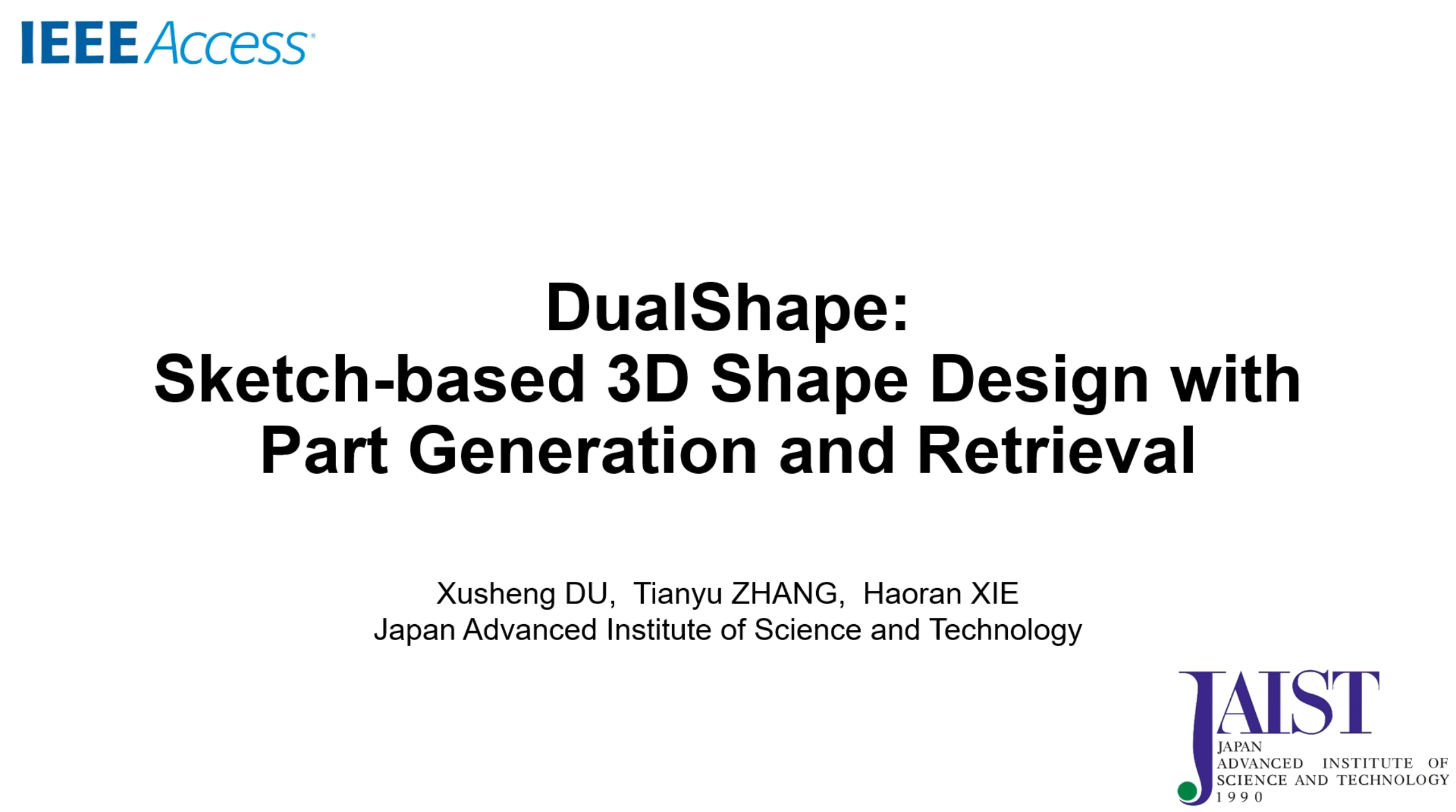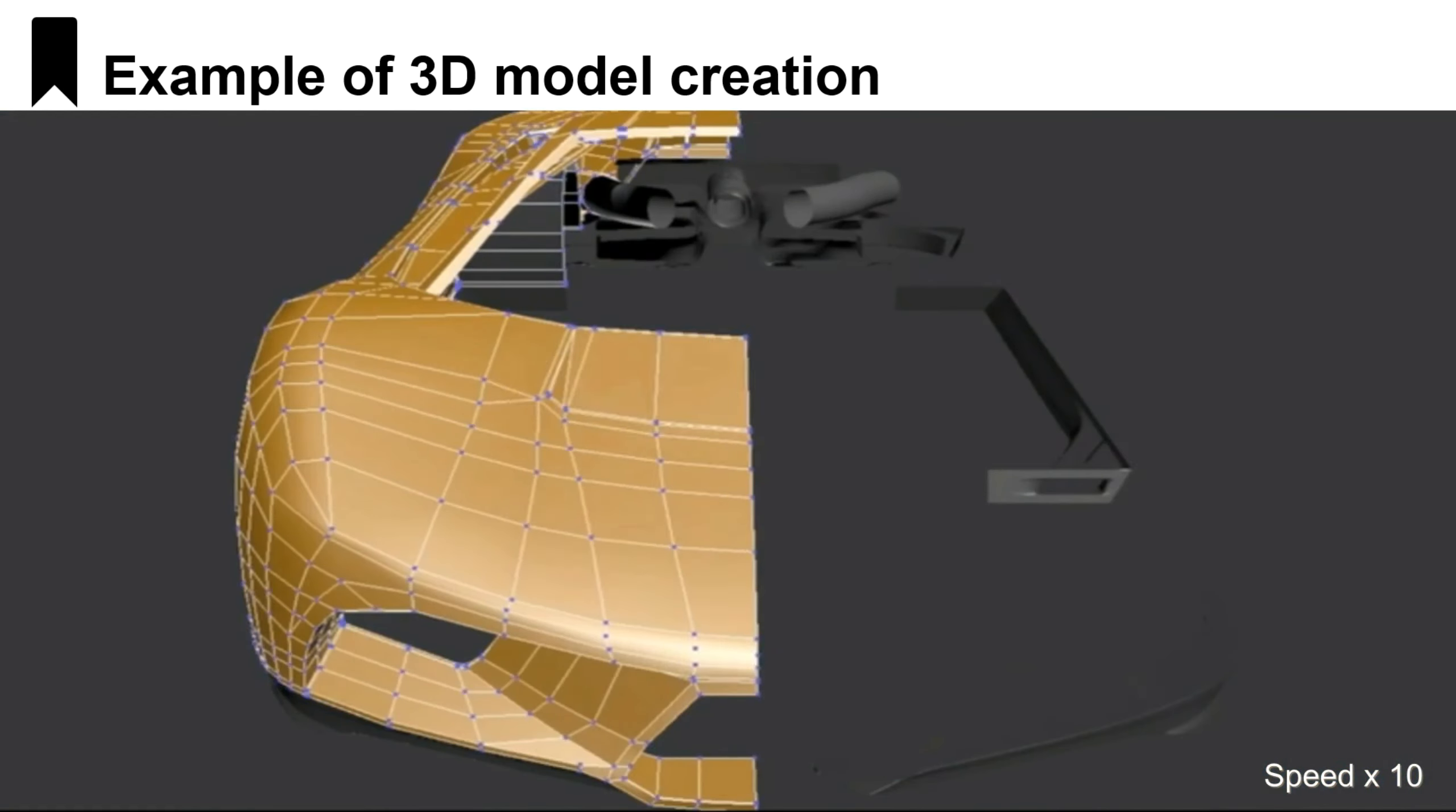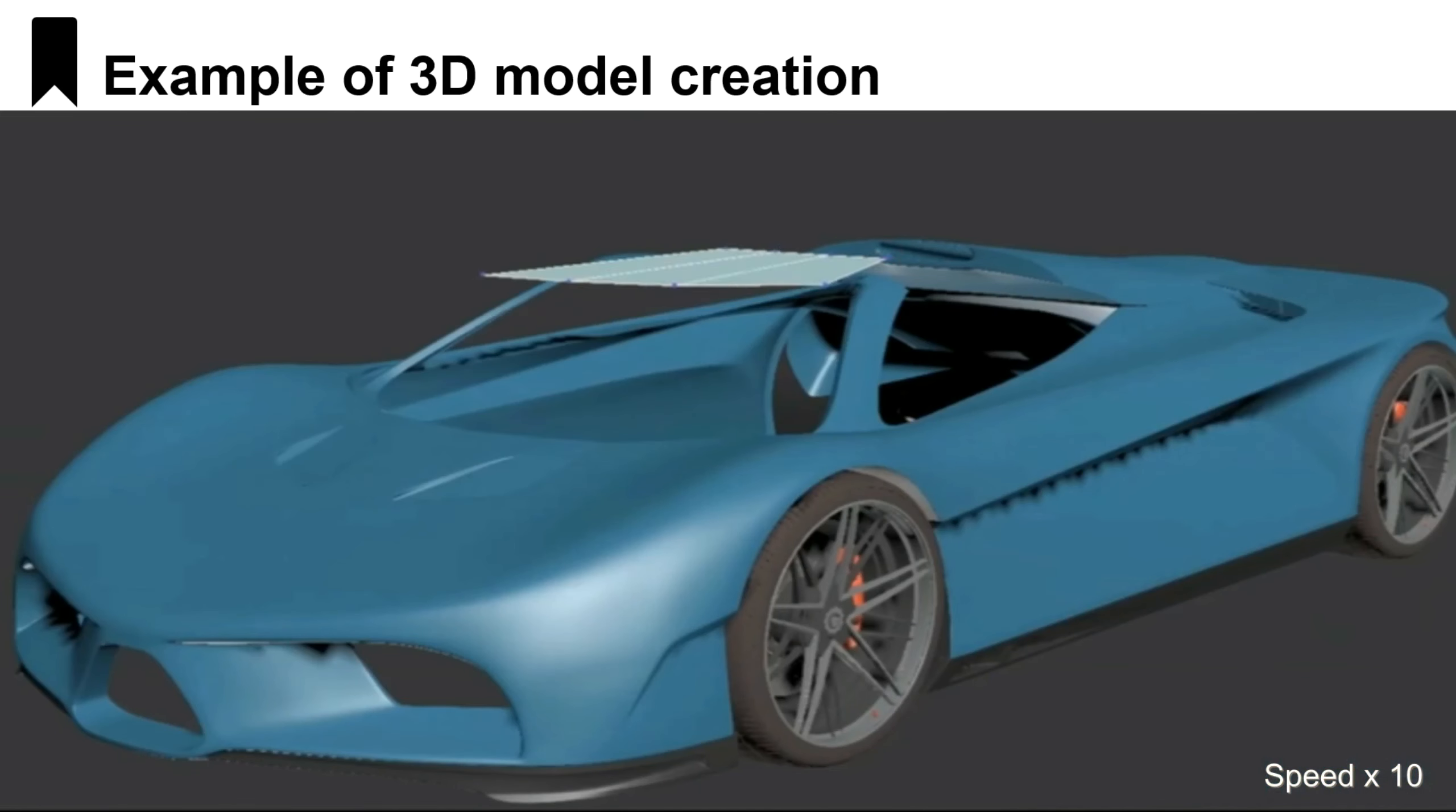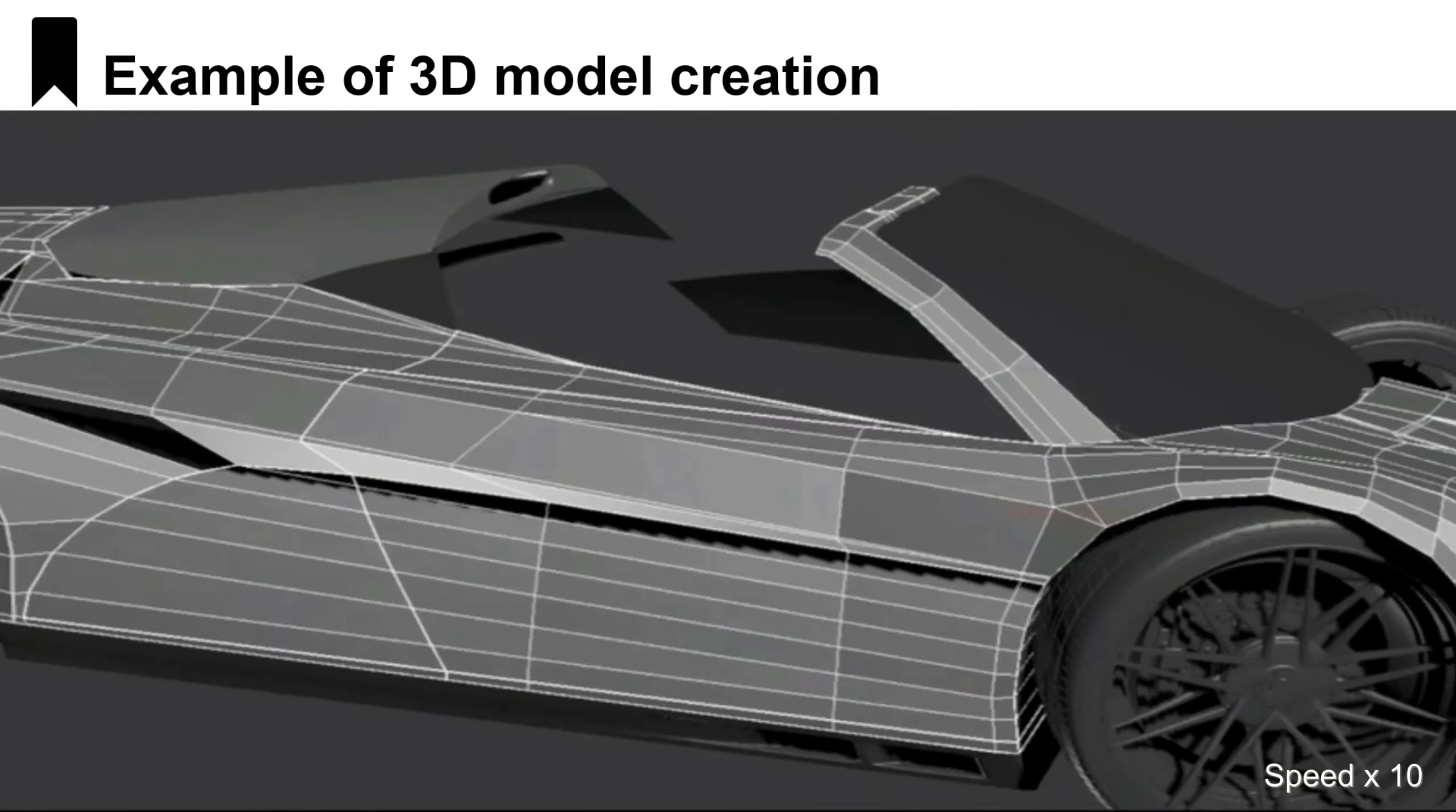Dual shape sketch based 3D shape design with part generation and retrieval. We did this research mainly because the construction of 3D models of man-made objects is a difficult task. As this page shows, it is an example of a car model created using 3ds Max, but for users who lack 3D experience, especially novices, it will be more difficult.